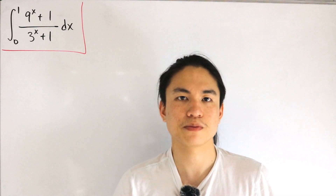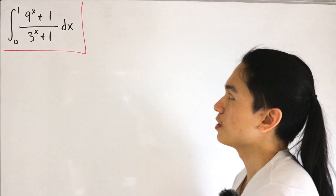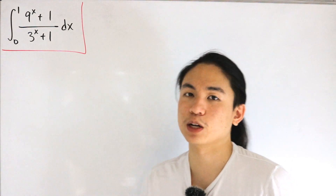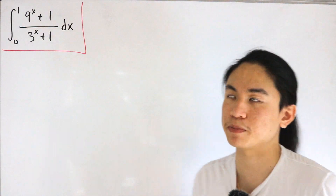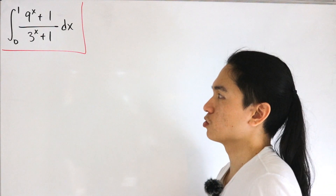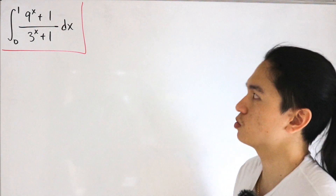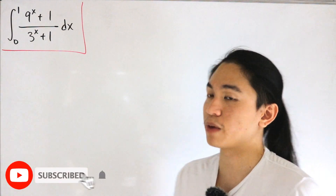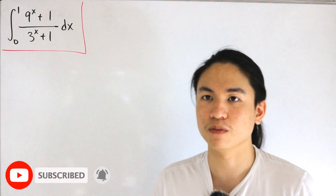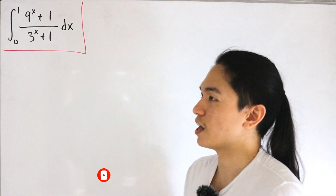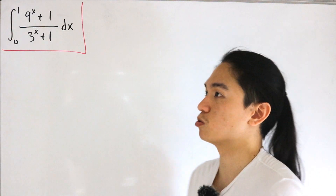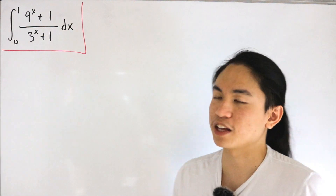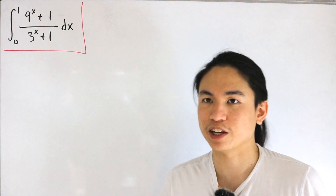We'll go back to another video. Here we have a definite integral from zero to one, and our integrand consists of some exponential functions where the base is not the constant e but some real numbers. From a first glance it might look a little uneasy or uncomfortable — you might be thinking, is it possible to do something elementary out of this from calculus? But you've got to think about things a little differently.